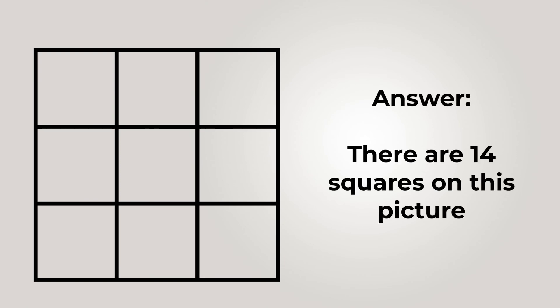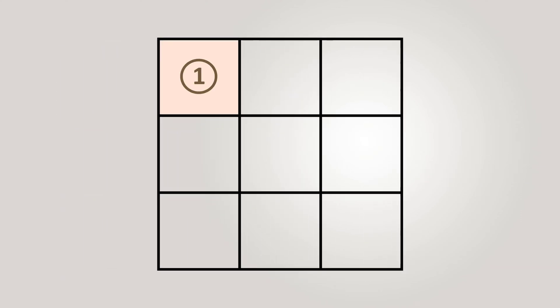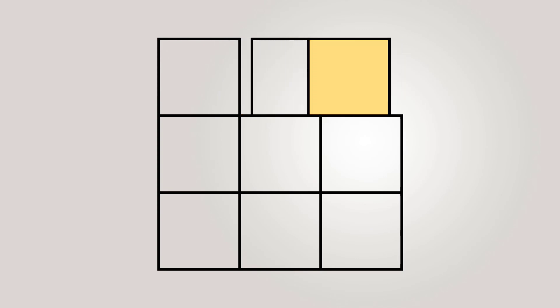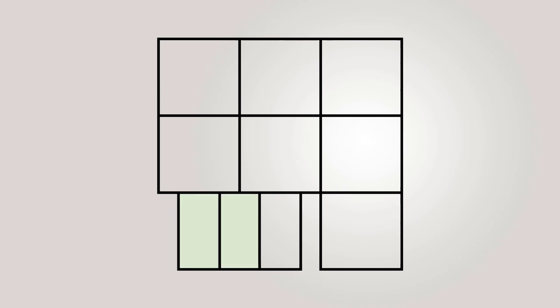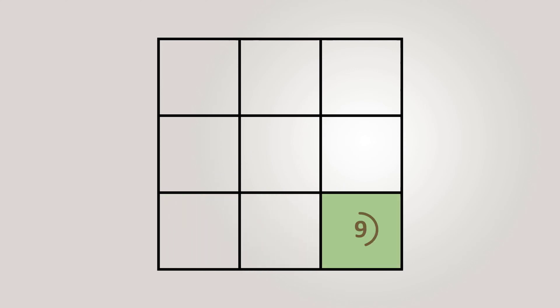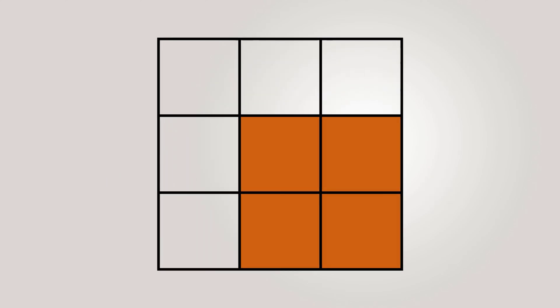There are 14 squares that can be identified in this picture. Some are much easier to identify than others. Let me draw them for you: there are 9 small squares — 1 through 9. Even though small squares are easy to spot, let's look at the medium-sized squares. There are 4 of them: number 10, 11, 12, and 13. And then there is one large square — number 14.